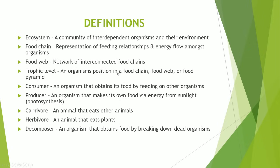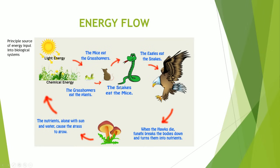Let's go through a couple of definitions. We've got the ecosystem, which is a community of interdependent organisms and their environments. A food chain is a representation of feeding relationships and energy flow amongst several organisms. A food web is basically a network of several food chains. A trophic level defines an organism's position in a food chain, food web, or a food pyramid. A consumer is simply an organism that obtains its food by feeding on other organisms. A producer, on the other hand, is an organism that makes its own food through sunlight, and we call that photosynthesis. A carnivore is an animal that eats other animals, and a herbivore is an animal that eats plants. A decomposer is an organism that obtains food by breaking down dead organisms. So let's take a quick look at the energy flow inside an ecosystem.